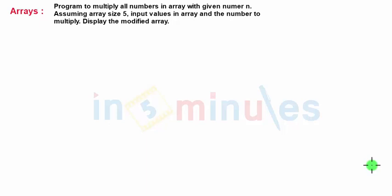Welcome to in 5 minutes. Now we'll be writing a program to multiply all numbers in a given array with the given number n. We'll assume the array size is 5. Then we'll input 5 values in the array. We'll also input a number to multiply, and then we'll multiply all the numbers in the array by the given number and display the modified array.